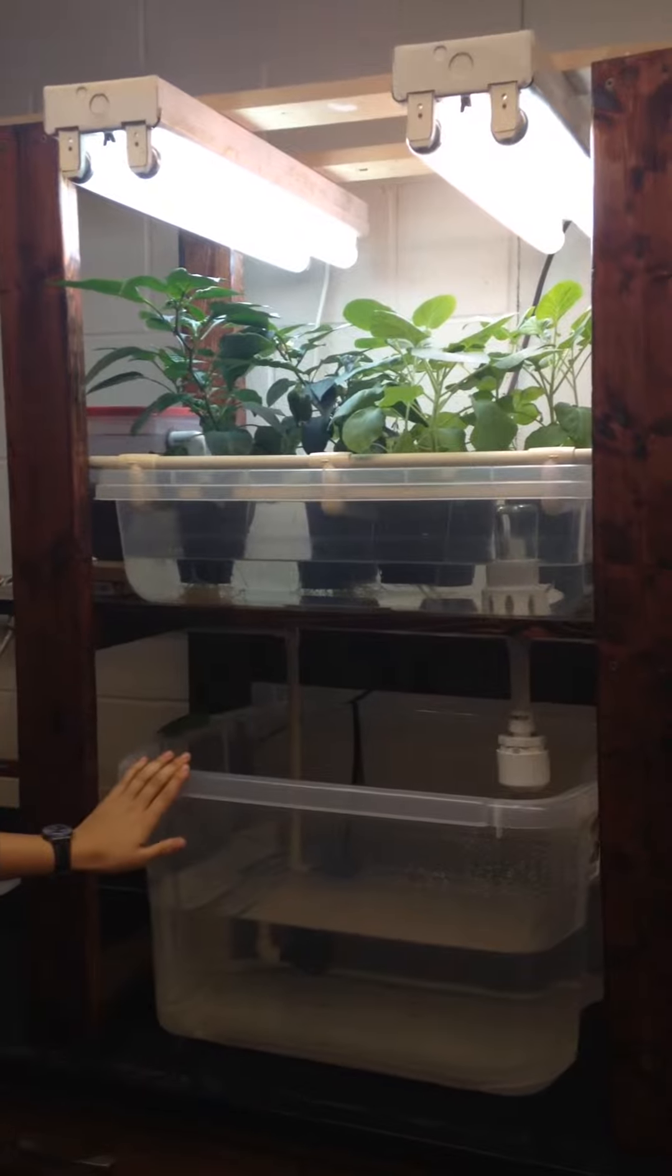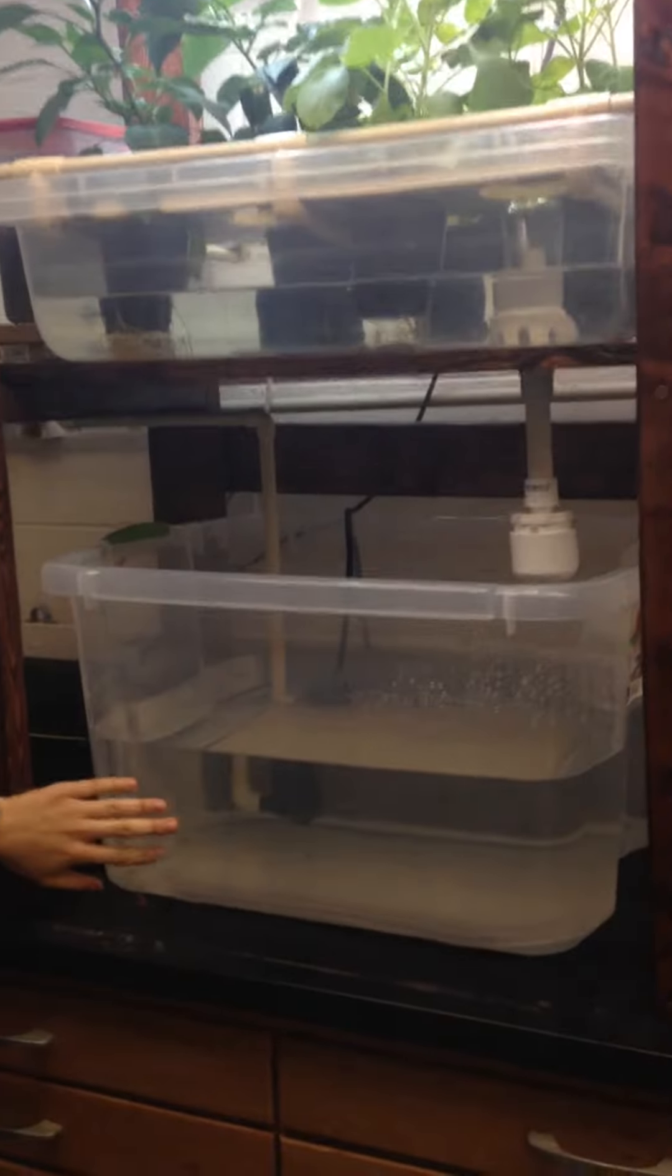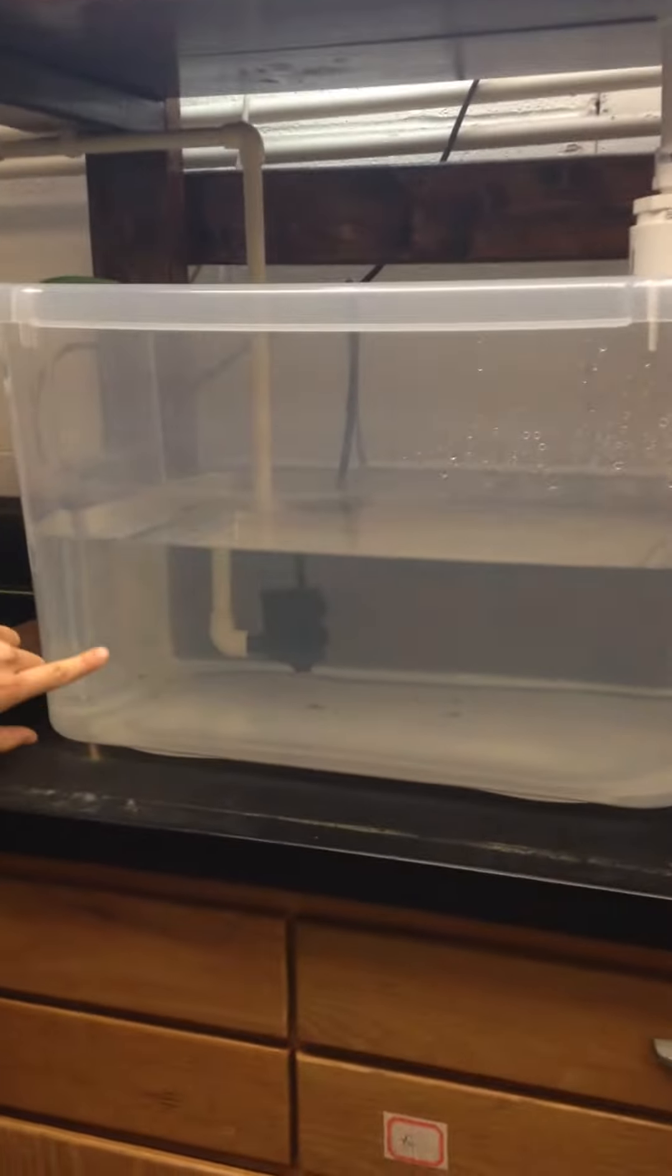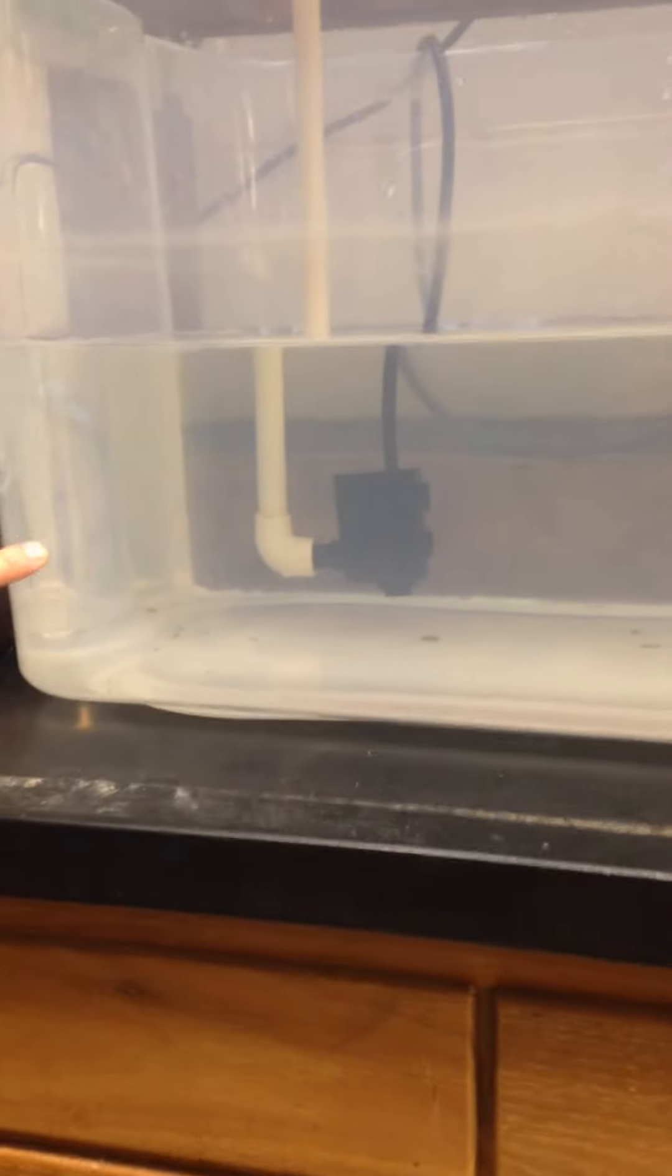The first component is the aquarium. This aquarium normally houses fish, but you'll notice in the back is a small fountain pump connected to PVC pipe. This piping takes the water from this component up and through the system.